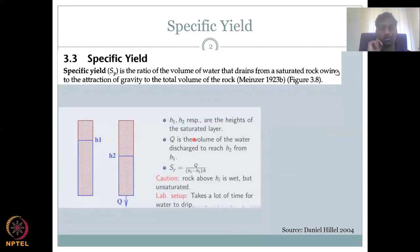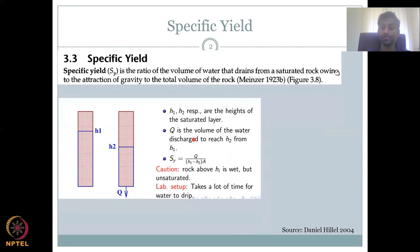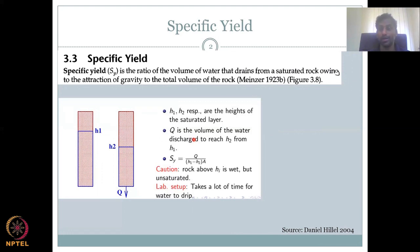Let's visualize it to understand it better. We have a soil material where we want to understand the groundwater specifically. H1 is the initial water-saturated layer of the water table. After some time the water table falls down to H2 because of gravity. So you have a saturated layer and gravity is working on that layer, so the water level drops down.